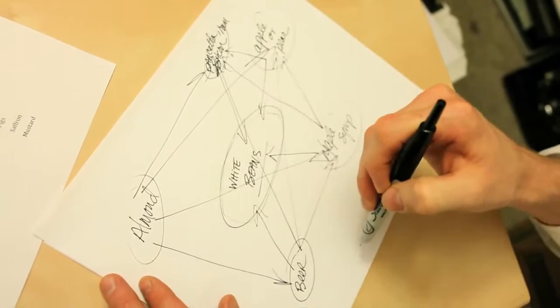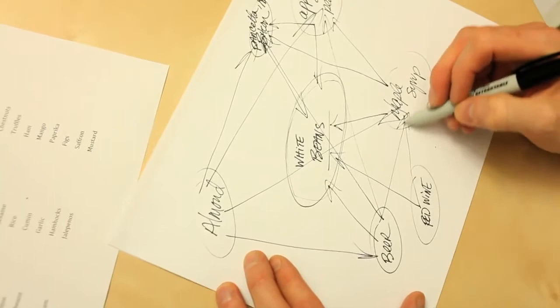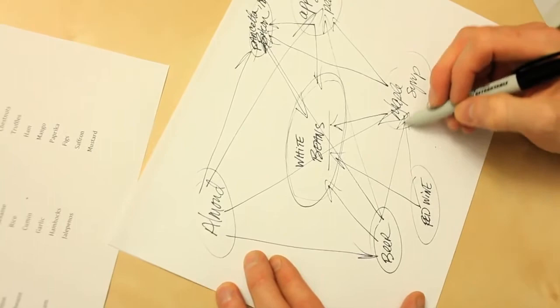Let's say instead of beer, we would have gone with red wine. Okay, I can see red wine going with beans. I can't really see red wine going with maple syrup. Red wine could go with apples. Red wine certainly goes with pork products. And red wine could go with almonds. But it doesn't go with the maple syrup, so it can't be in the equation.